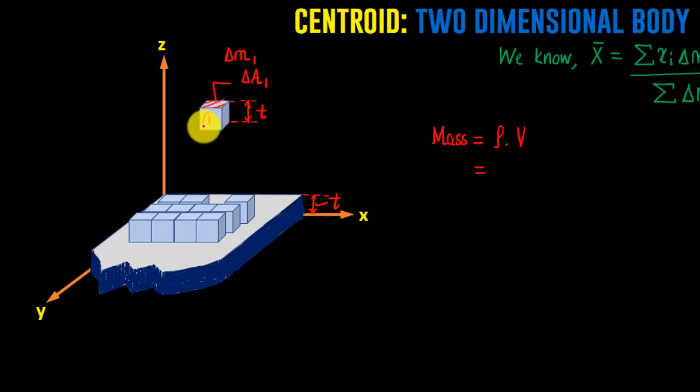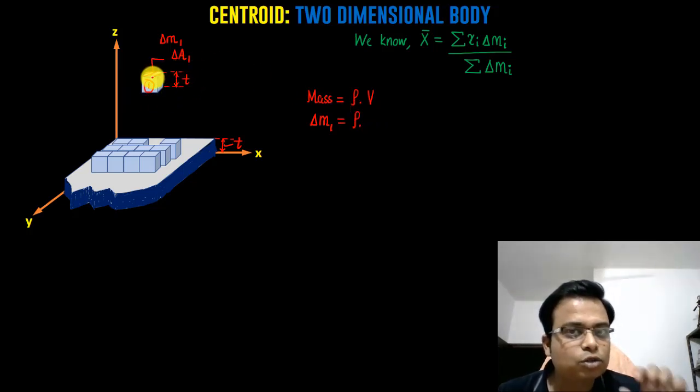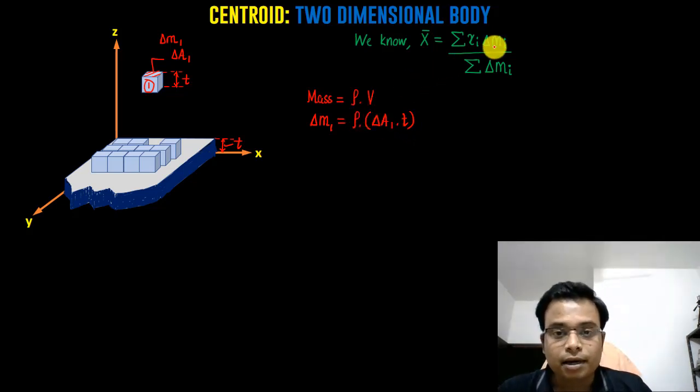That's Δa₁ multiplied by t. You need to put this into the formula. The best thing we can do now is take ρ and t as common from both numerator and denominator.